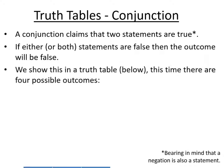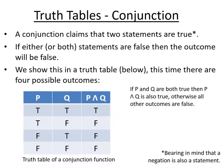The truth table has four lines because there are two-to-the-n, two-to-the-two possible outcomes. P and Q are our two simple statements. The first line: P is true and Q is true. Then P is true and Q is false. Third line: P is false and Q is true. Finally: P is false and Q is false. For each of those lines, the output of the conjunction is shown on the far right — when P is true and Q is true, P AND Q is true.